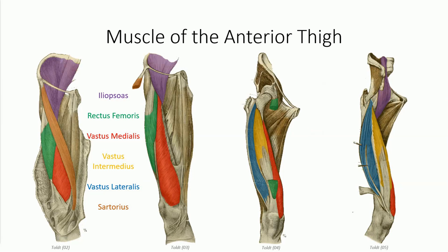The principal muscle of the thigh is the quadriceps femoris muscle. As the name implies, it is composed of four separate heads, all of which insert on the superior border of the patella as the quadriceps femoris tendon. The patella serves as a sesamoid bone, forcing the tendon of the quadriceps anteriorly and increasing its mechanical advantage.